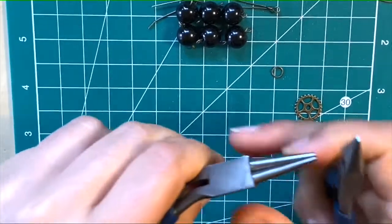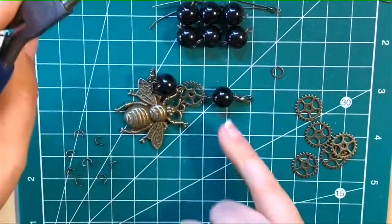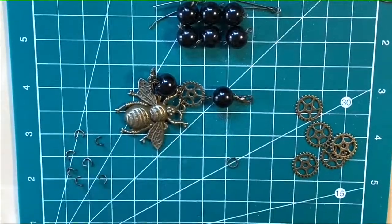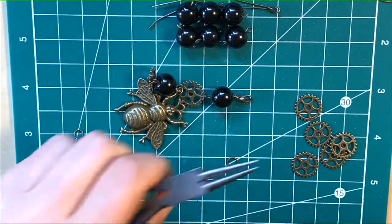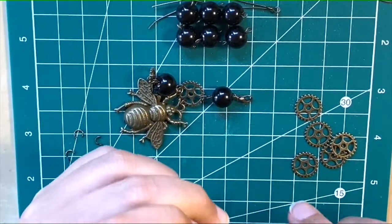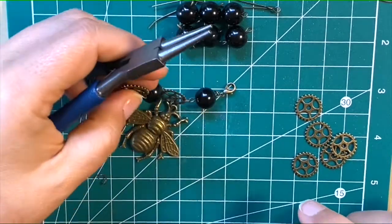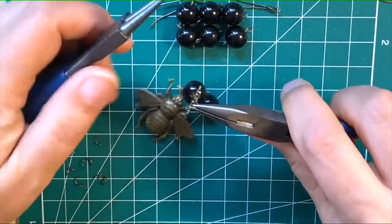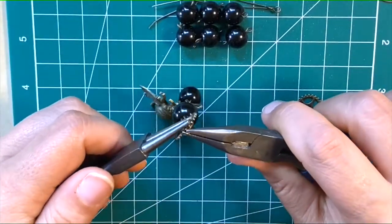That's all nicely closed - that's our end of the necklace. Then exactly the same at the other end, we want to put our larger loop so that we don't struggle to fasten our necklace. Jump ring onto - I'm choosing to put it onto this cog, but it could be onto a bead equally.